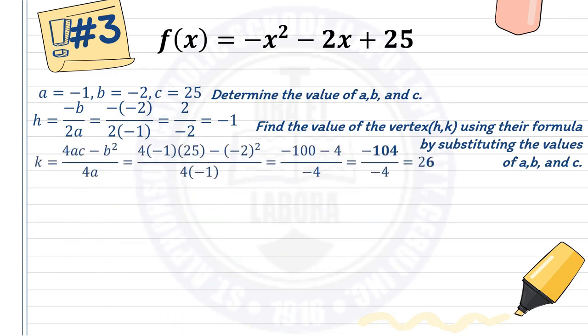Next, find k using k equals 4ac minus b squared over 4a. Substituting: 4 times negative 1 times 25 minus negative 2 squared over 4 times negative 1. That gives negative 100 minus 4 over negative 4, which is negative 104 over negative 4. So k is 26.